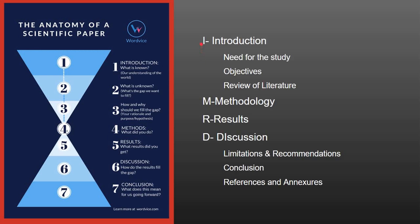This style of writing a research paper is called IMRAD style. I stands for introduction, consisting of need for the study, objectives and review of literature. M stands for methodology, R stands for results, D stands for discussion, which includes limitations and recommendations, followed by conclusion, references and annexures if any.